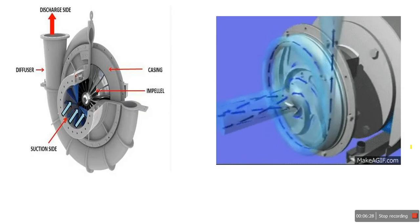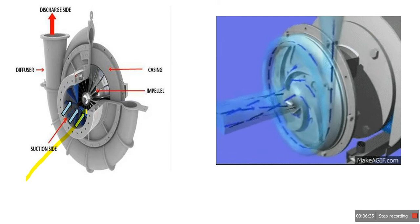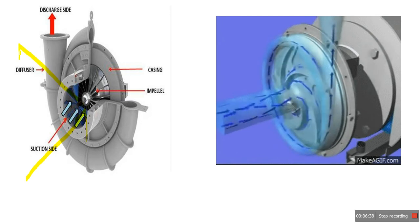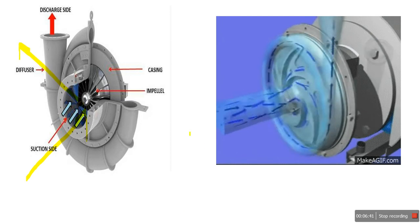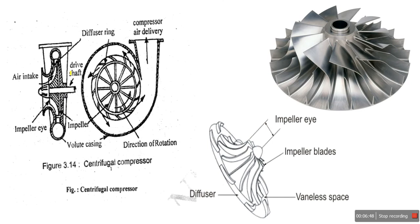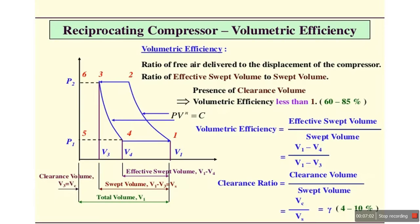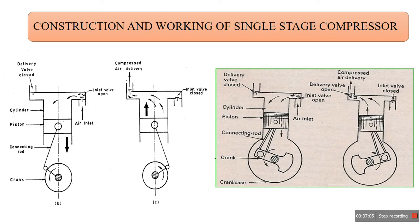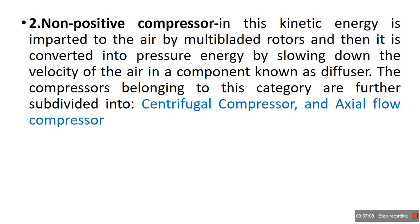Now we move to the centrifugal compressor. This is a type of compressor where air enters axially and moves outward radially. The air enters and passes through the impeller, and at the end of the impeller the periphery interfaces with the diffuser ring, which plays a very important role. It works on the dynamic principle — this is a non-positive displacement compressor where kinetic energy is imparted to the air by multi-bladed rotors such as an impeller.